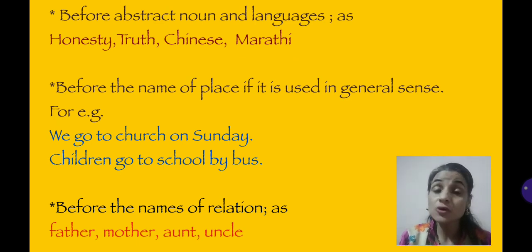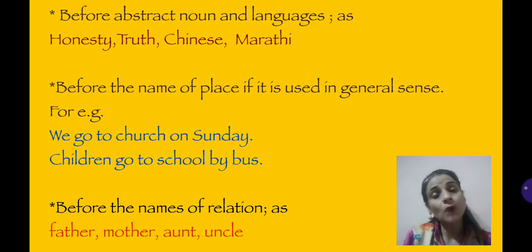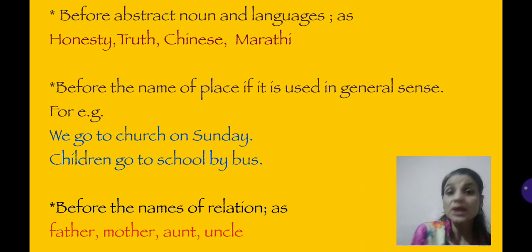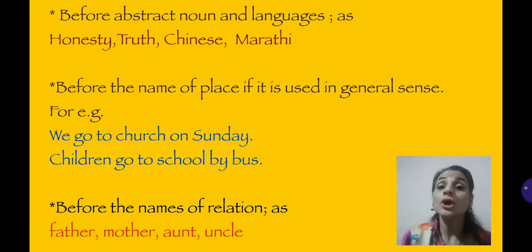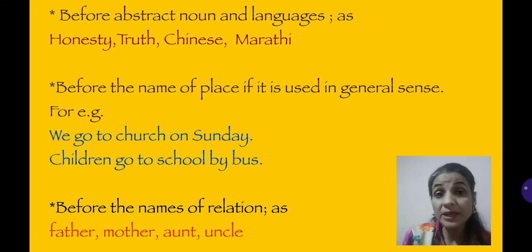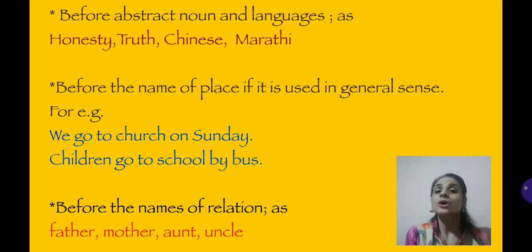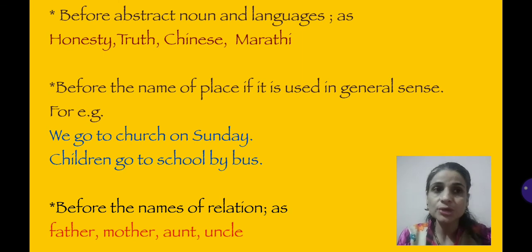Next: before the names of a place if it is used in a general sense. Like, 'children go to school from Monday to Saturday' — school is used in a general sense here, so no need to say 'the school'. 'Children go to the school' is wrong. Another example: 'We go to church on Sunday' — we go to church to pray, so in general sense, don't use 'the'. And before the names of relations — father, mother — don't say 'he is the father'. Before a relation, also don't use 'the'.